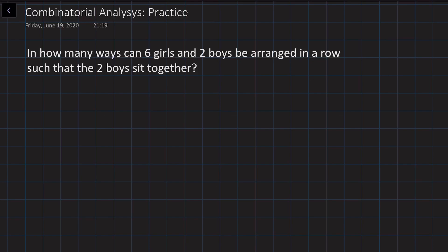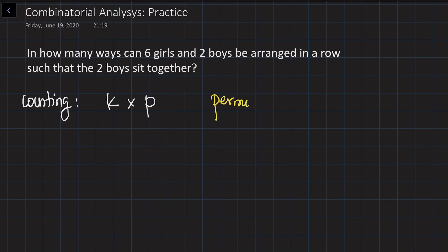This problem reveals the applications of the two most important rules of combinatorial analysis. The first rule is called the counting rule, which states that if one event can happen in k different ways and another can happen in p different ways, together they can happen k times p different ways. The second rule we are going to use is called the permutation rule, which states that if you have n different objects, the number of permutations is equal to n factorial.